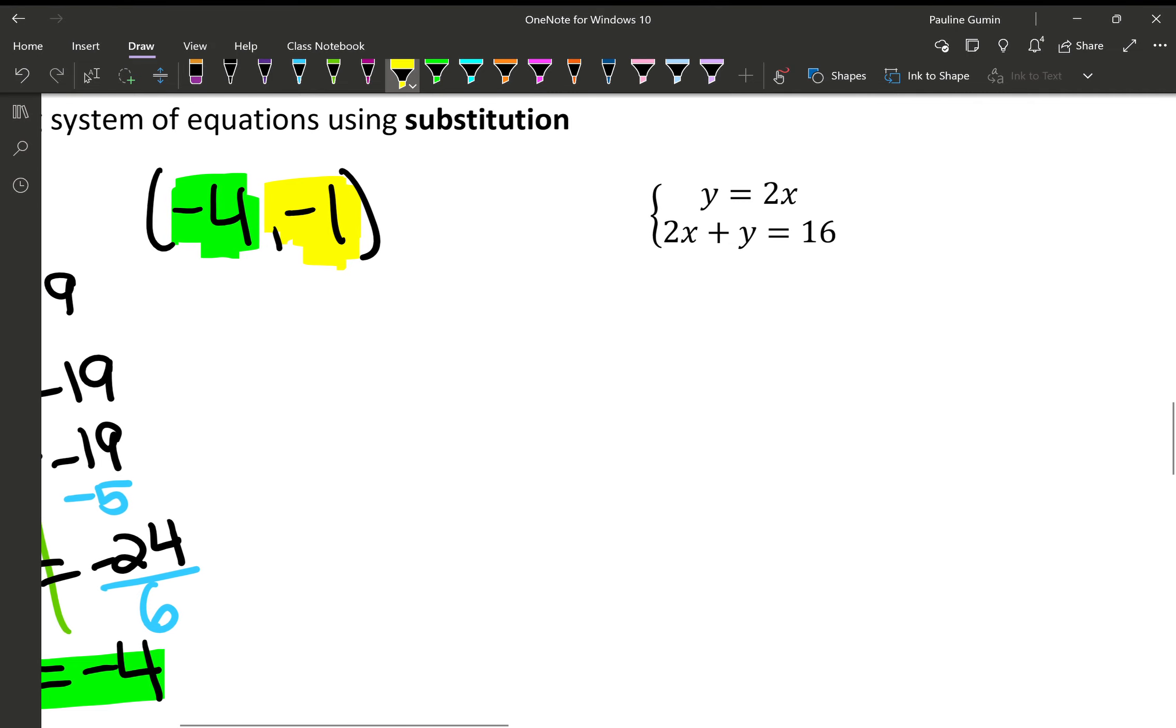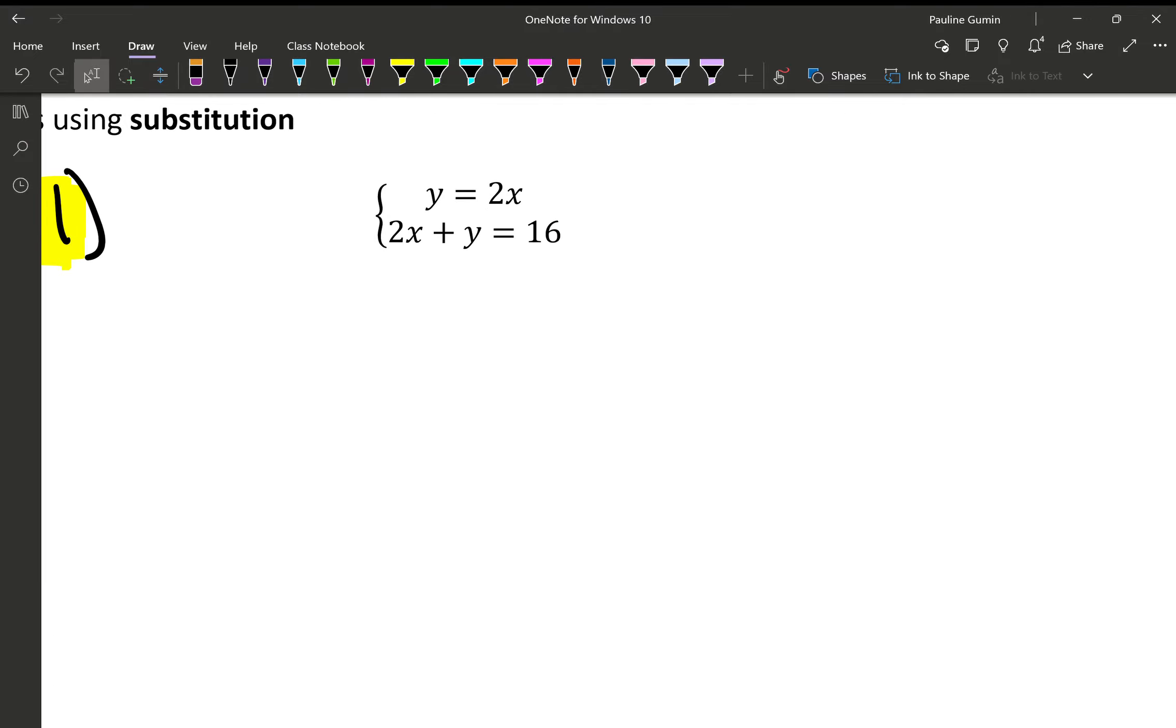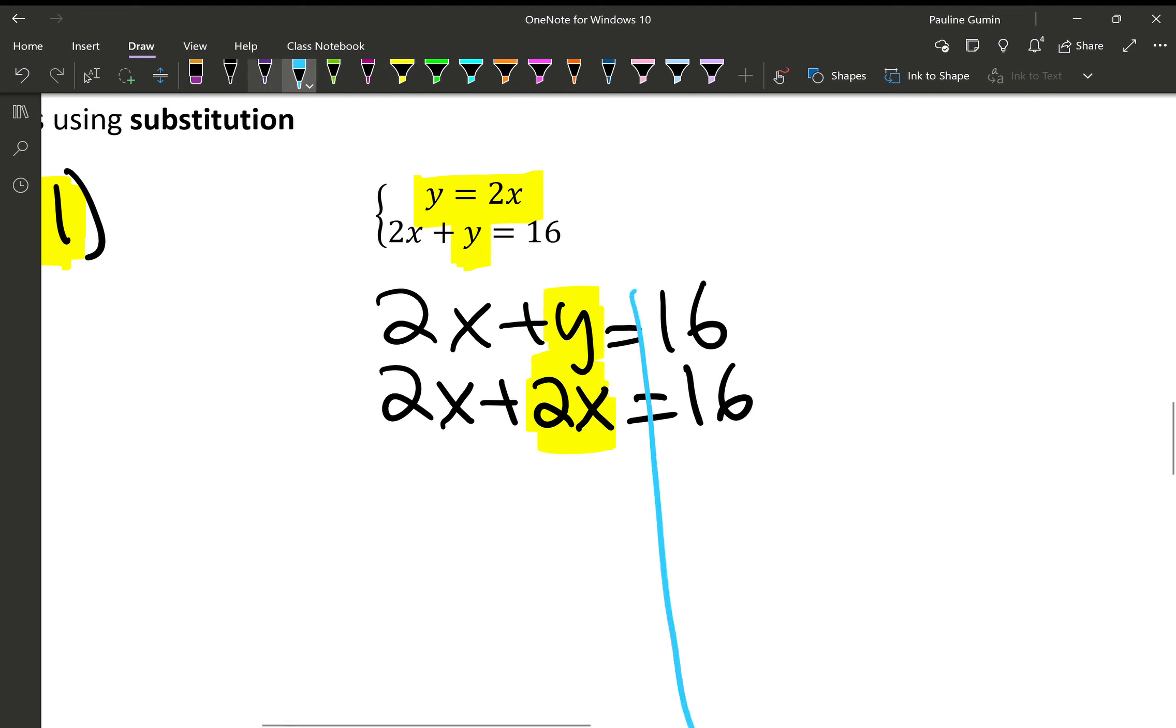Let's see if we can do that again. This time, instead of having y equaling a number, we have y equals 2x. Totally fine. We can still substitute. Since we have a y equals, we'll replace it into the second equation. So instead of 2x plus y equals 16, I'm going to have 2x plus 2x equals 16. 2x plus 2x is 4x. And then, of course, so I combine these like terms. And I'm going to divide both sides by 4.